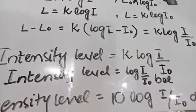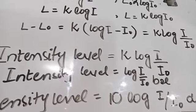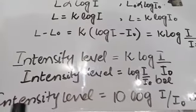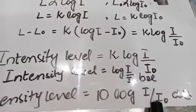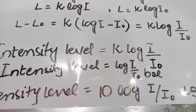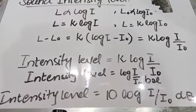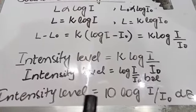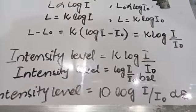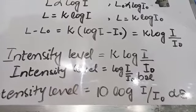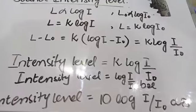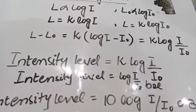Since Bel is a large unit, we use the smaller unit: 1 Bel equals 10 decibel. Converting, the intensity level equals 10 log (I / I₀) decibel. This is the required relation. Here, 10 is a constant, I is the intensity of the unknown sound, I₀ is the intensity of the faintest audible sound (reference), and decibel is the unit of intensity level.